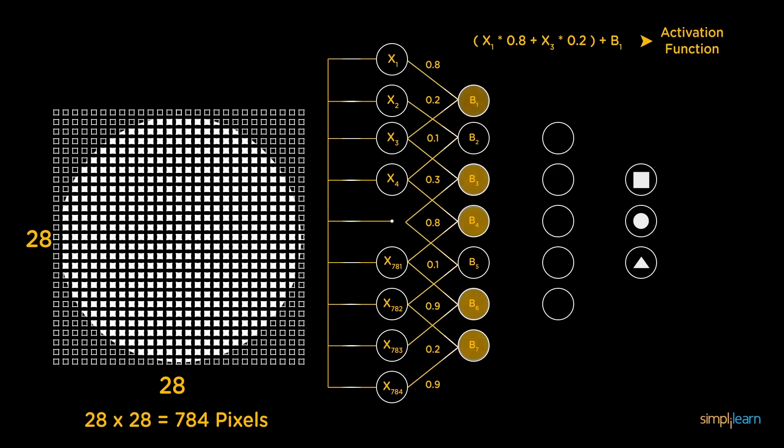An activated neuron transmits data to the neurons of the next layer over the channels. In this manner, the data is propagated through the network. This is called forward propagation.